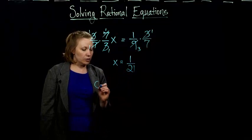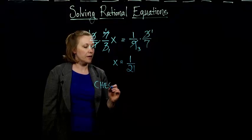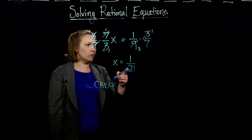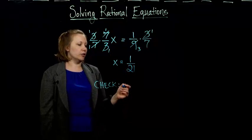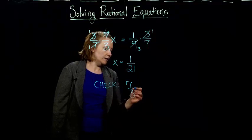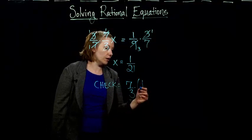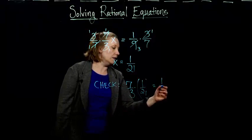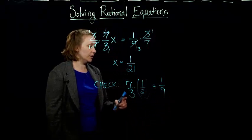And then just like regular equations, we can check our answer by plugging the 1/21 right back into our original equation, which was 7/3 times x. So our x, we're going to substitute in 1/21, so we can check it. And we should get that that's equal to 1/9.